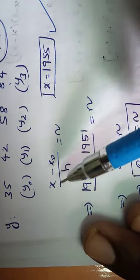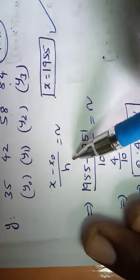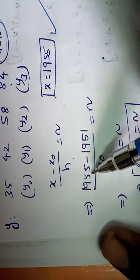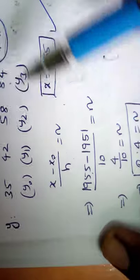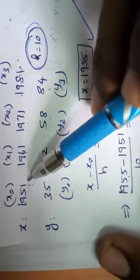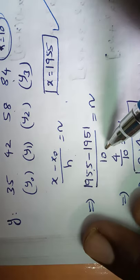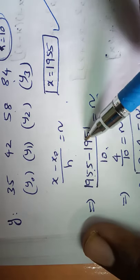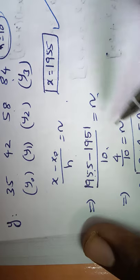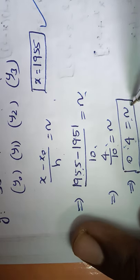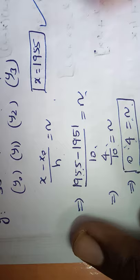Applying the formula n = (x − x₀) / h: x is 1955, x₀ is 1951, h is 10. So n = (1955 − 1951) / 10 = 4 / 10 = 0.4. Therefore n = 0.4.